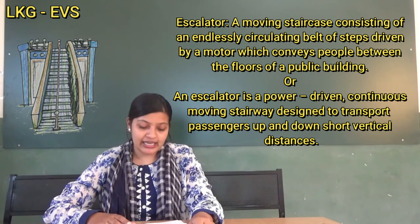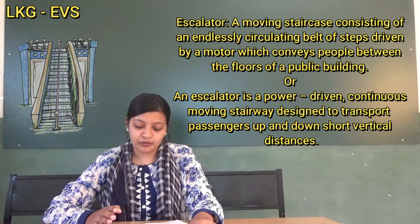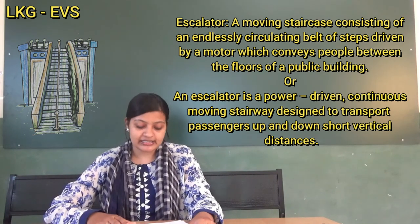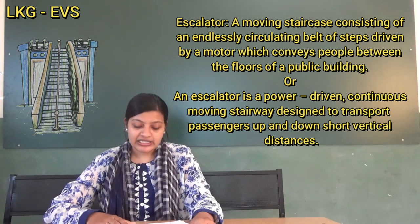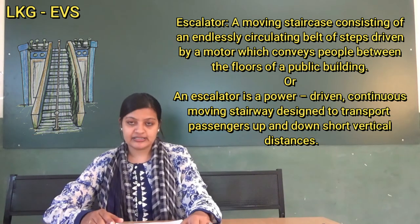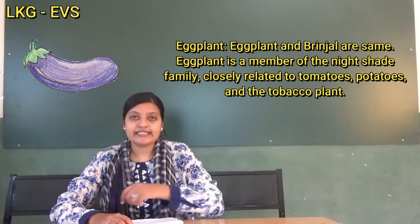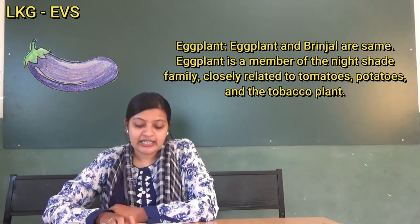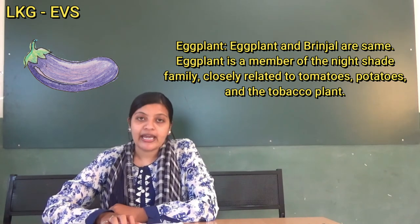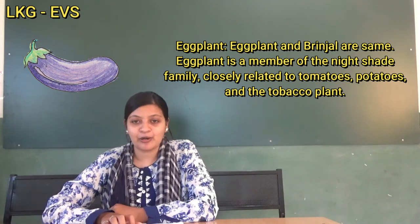Next, we will go with escalator. E-S-C-A-L-A-T-O-R. An escalator is a moving staircase consisting of an endlessly circulating belt of stairs driven by a motor, which conveys people between the floors of a public building. It is a power-driven continuous moving stairway designed to transport passengers up and down short vertical distances. Next, eggplant. Eggplant is a member of the nightshade family, closely related to tomatoes, potatoes, and the tobacco plant.